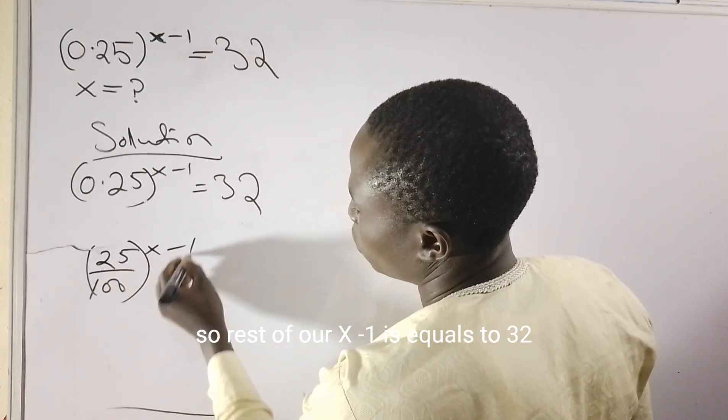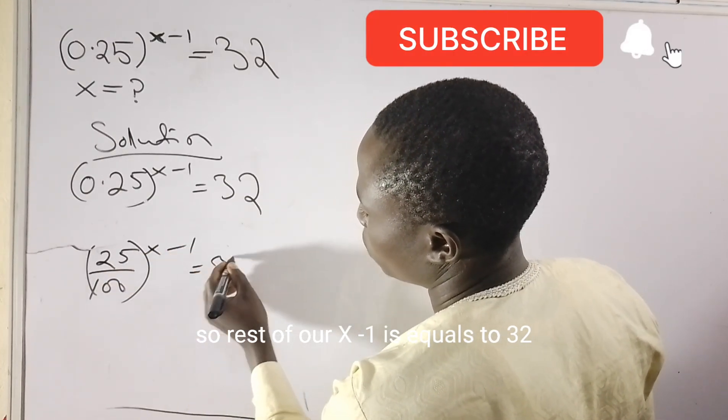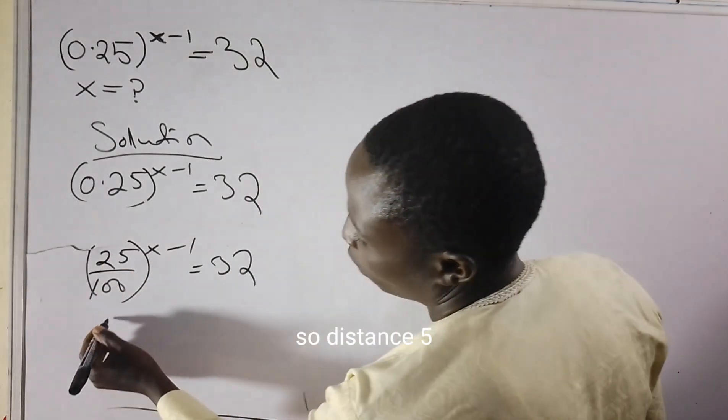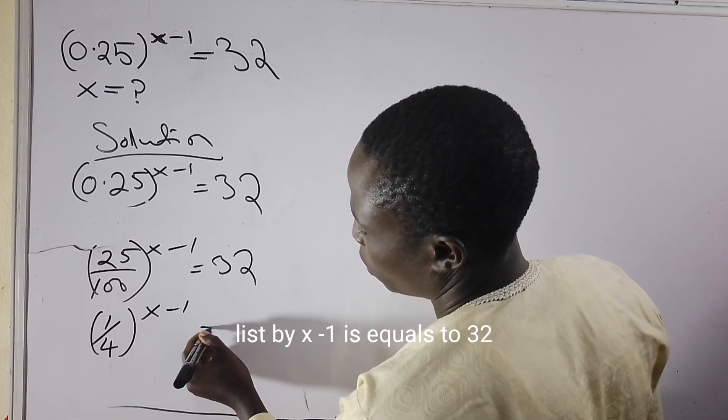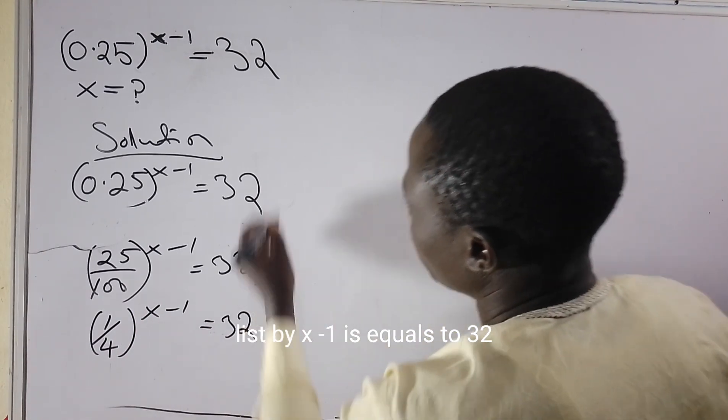Raised to the power x minus 1 equals 32. So this 25 over 100 is the same as 1 over 4, raised to the power x minus 1 equals 32.